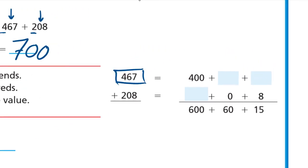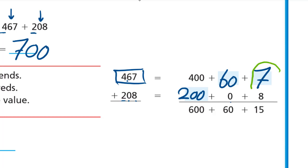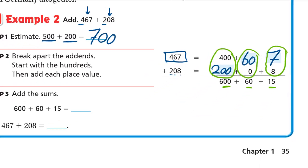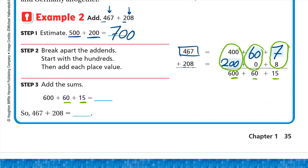Let's break apart 467: the 4 is 400, the 6 is 60, and the 7 at ones we keep as 7. For 208: the 2 at hundreds is 200, zero at tens is 0, and 8 at ones. Now add: 7 plus 8 is 15; 60 plus 0 is 60; 400 plus 200 is 600. So we add 600 plus 60 plus 15. Fifteen plus 60 is 75, and plus 600 gives us 675.